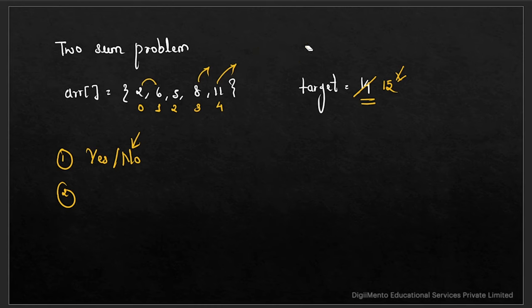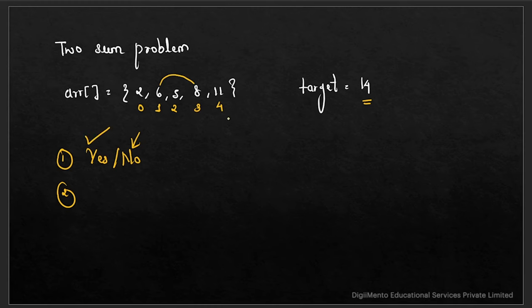Going back to our original problem with target 14: just by looking at the array we can say that 6 and 8 can make the value 14, so the target is achievable. The second type of sub-problem is to return the indexes that fulfill the target value. Here, indexes 1 and 3 fulfill our target value of 14. Those are the two ways the interviewer can ask you to solve this problem.